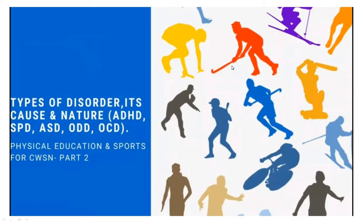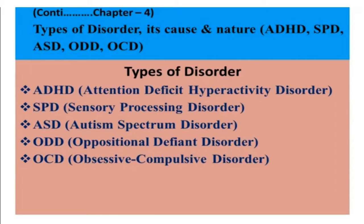Today we are going to see types of disorder, their causes and nature. In this lecture we are going to study about types of disorder: ADHD, SPD, ASD, ODD and OCD.